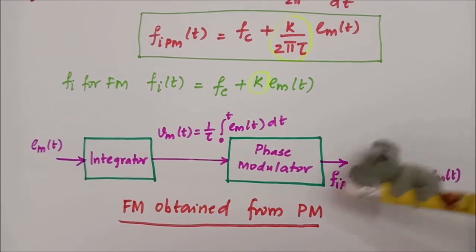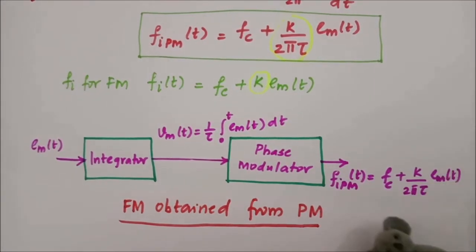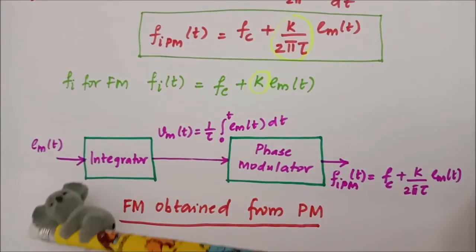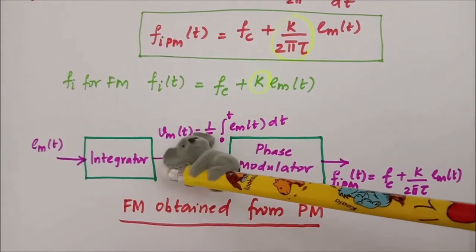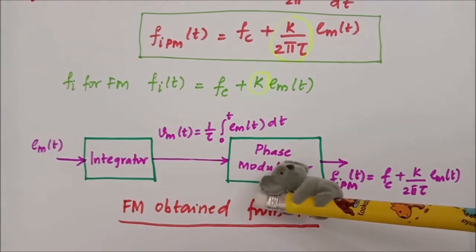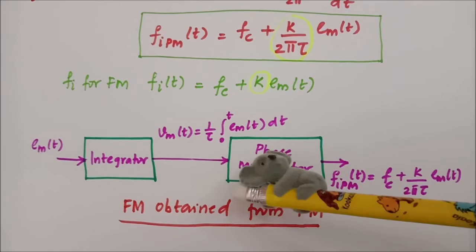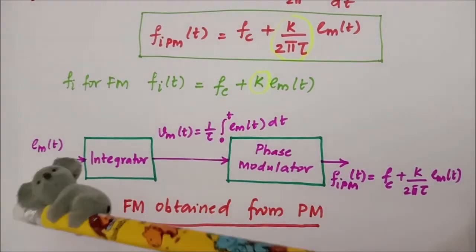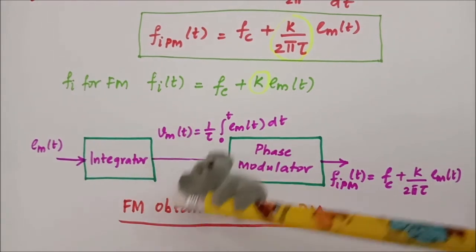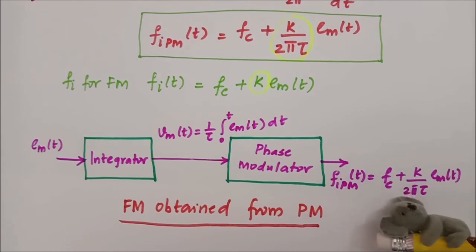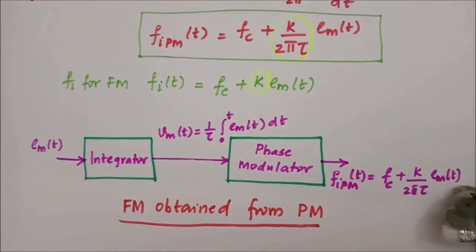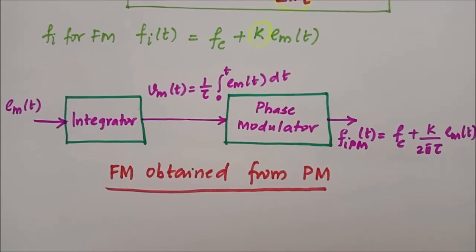This block diagram shows how to generate a frequency modulated wave using a phase modulator. The input signal em(t) is first integrated to produce vm(t), which is then fed into the phase modulator. The integration is done to nullify the differentiation present in the phase modulator, so the output matches exactly the expression for FM modulation. In this lecture we have defined phase modulation and derived the equivalence between FM and PM.